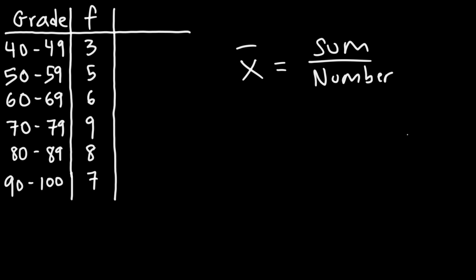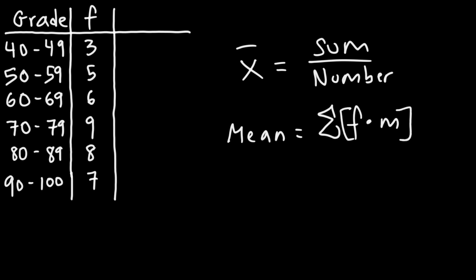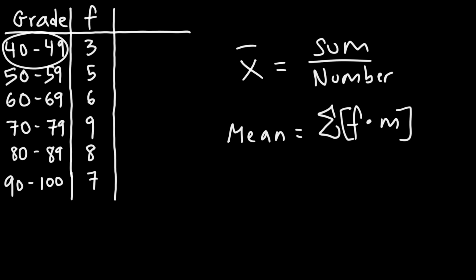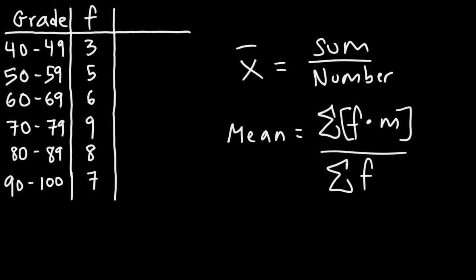For a grouped frequency table, the mean formula is modified. It's going to be the sum of the product of the frequency values times the midpoint, because we can't use an individual score since we have an interval. The best representative individual score is the midpoint of each grade interval. So the formula is: the sum of frequency times midpoint, divided by the sum of the frequency values.